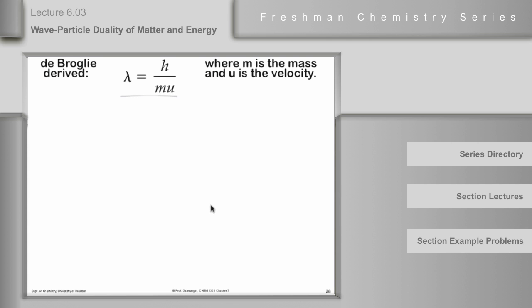And de Broglie had a lot to work with, and he was able to derive the de Broglie equation, which is shown here, which relates the wavelength of something that exhibits wave characteristics to the momentum. M is the mass. U is the velocity. So M times U is the momentum.